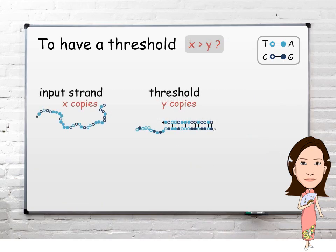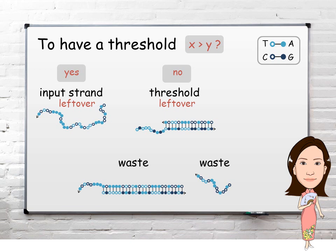Generally, to have a threshold y, one can start with y copies of the threshold molecule. And if there exists any input strand afterwards, it indicates that the input signal is above the threshold. Otherwise, there will only be threshold left over.